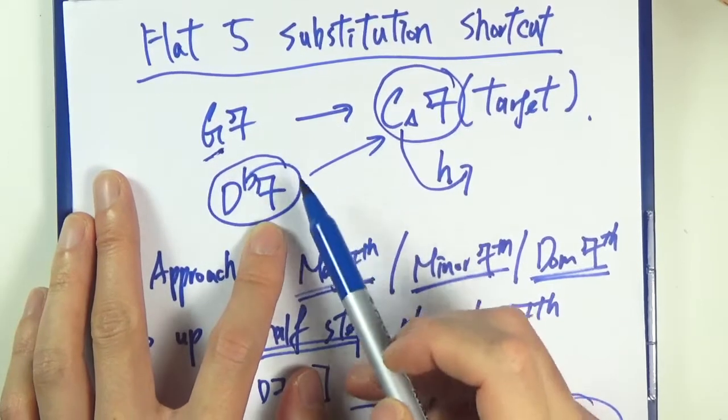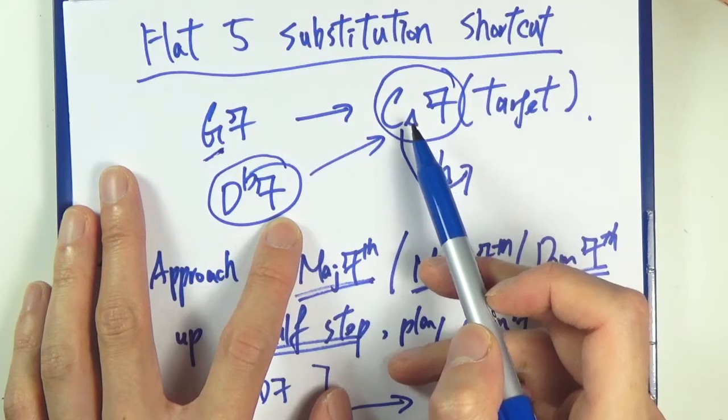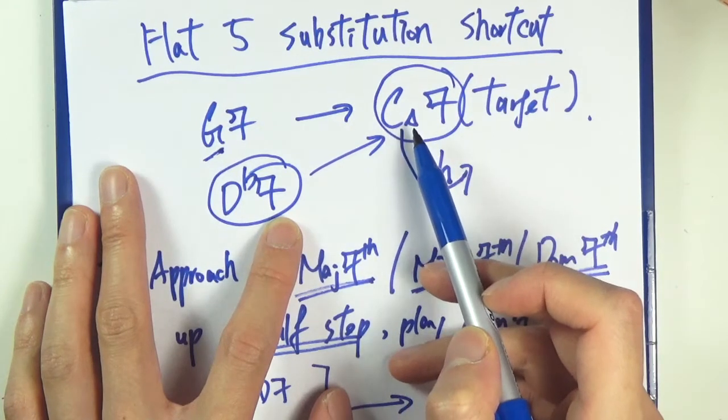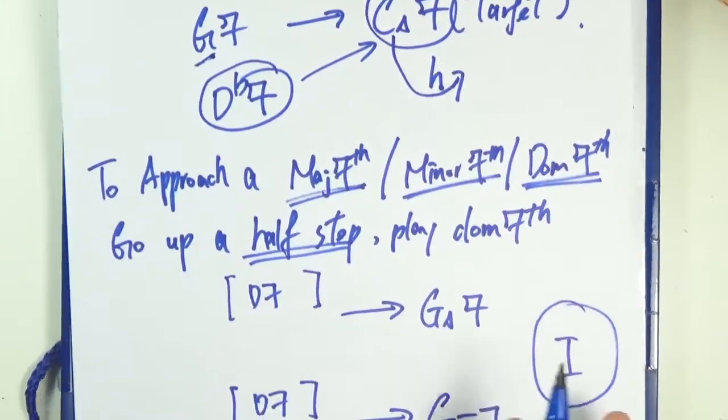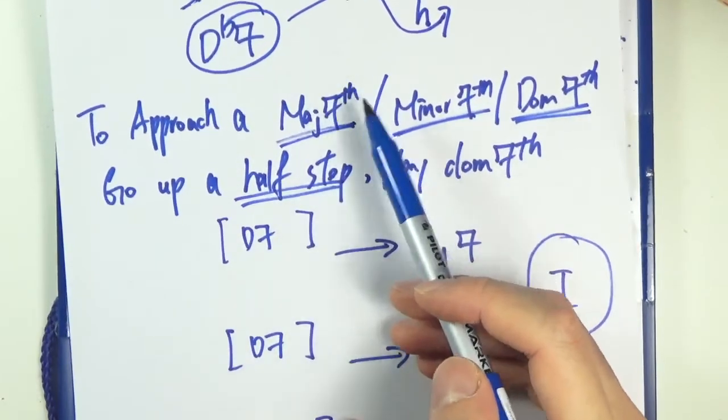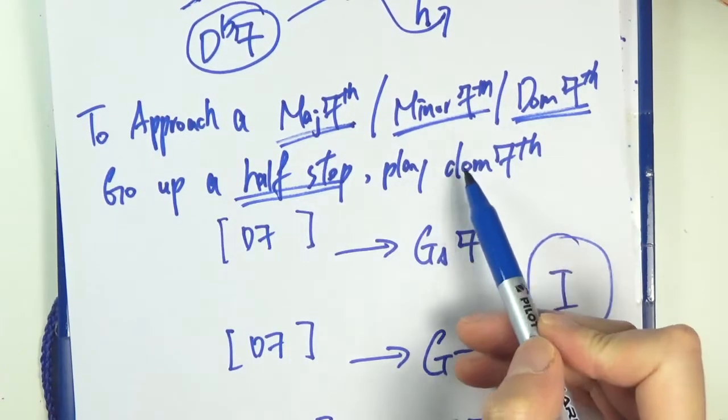The shortcut is to simply go up half a step from the target chord, the one chord, say C major seven, and just play dominant seven chord. To generalize, you can really approach either major seven, minor seven, or even dominant seven by a dominant seven chord as long as the dominant seven chord is a half step up.